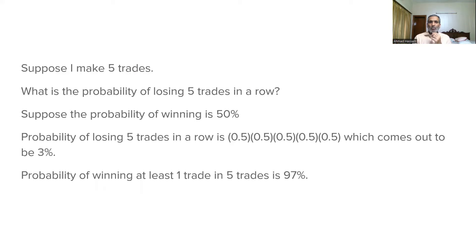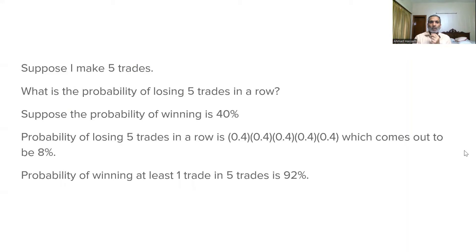When you flip a coin, it lands heads or tails. For a fair coin, the probability of landing heads or tails is always 50%. So the probability of losing 5 trades in a row is 0.5 × 0.5 × 0.5 × 0.5 × 0.5, which comes out to be 3%. In other words, the probability of winning at least 1 trade in 5 trades is 97%, which is very high. With a 50% win rate, you are almost sure to win at least 1 trade in 5 trades.